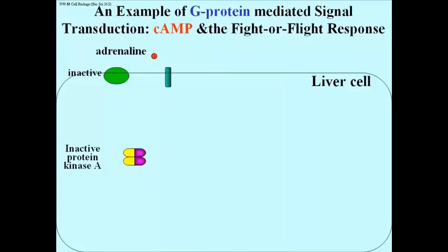The best known example of cyclic AMP action in eukaryotic cells is the fight or flight response to adrenaline, a hormone so polar it cannot get into target cells — in this case, liver cells.